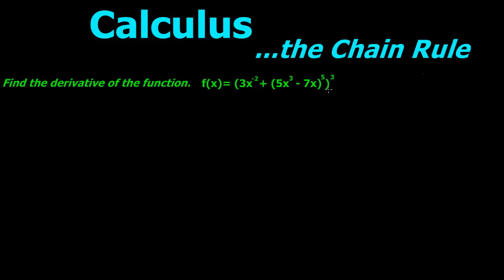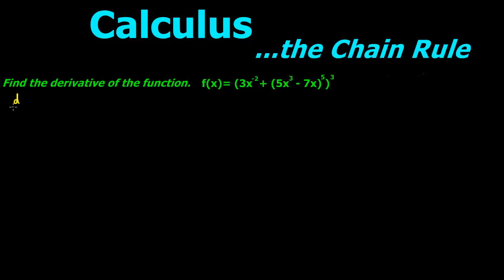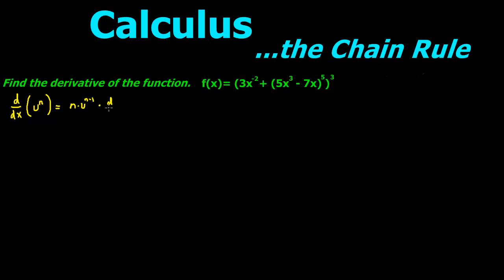To do this we're going to be using an equation that says d over dx — so the derivative of u to the nth power — is going to equal n, so your exponent, times u to the n minus 1, and that n minus 1 is going to be that 3 minus 1, times du over dx, or you can rewrite it just to say the derivative of u.